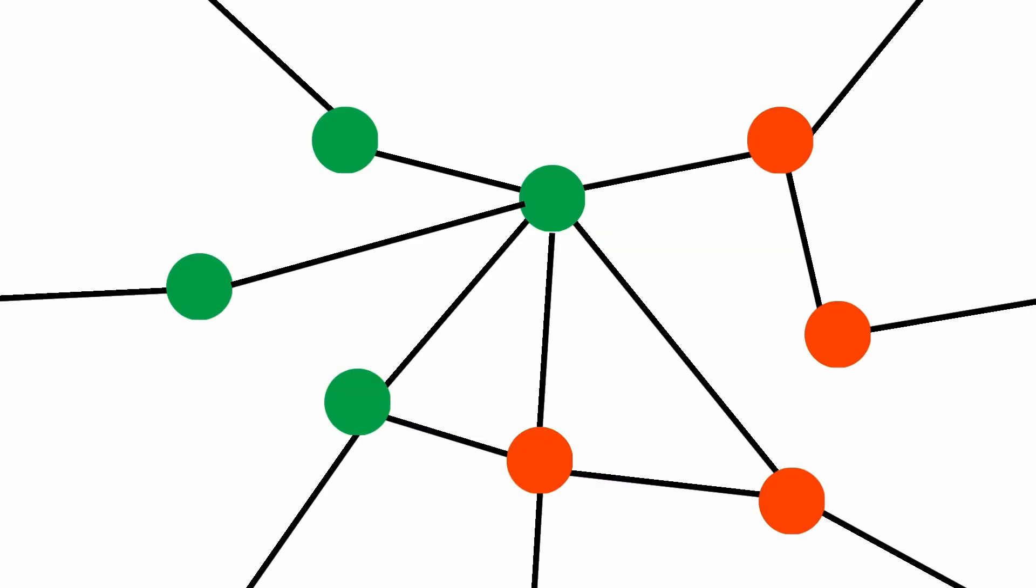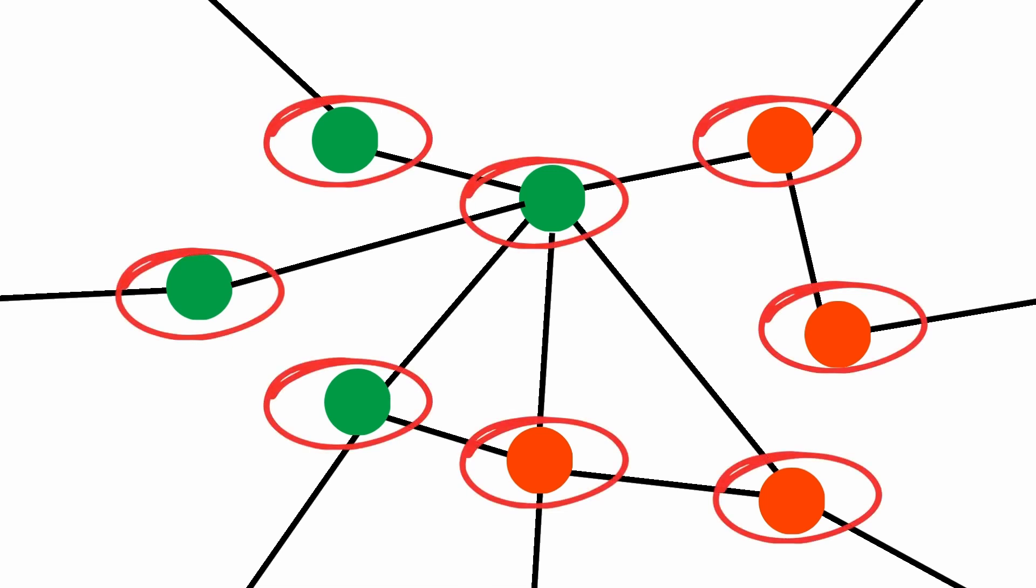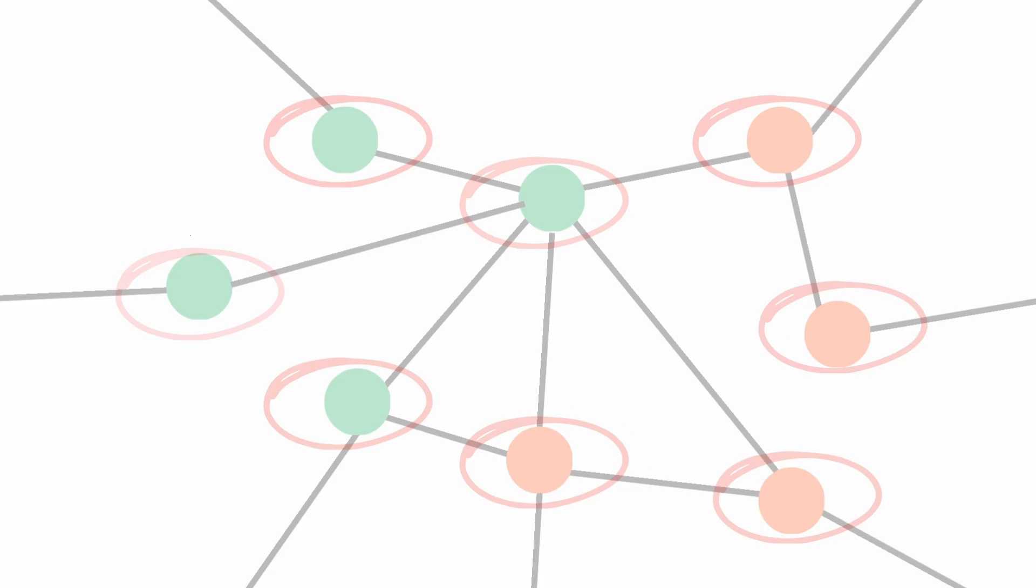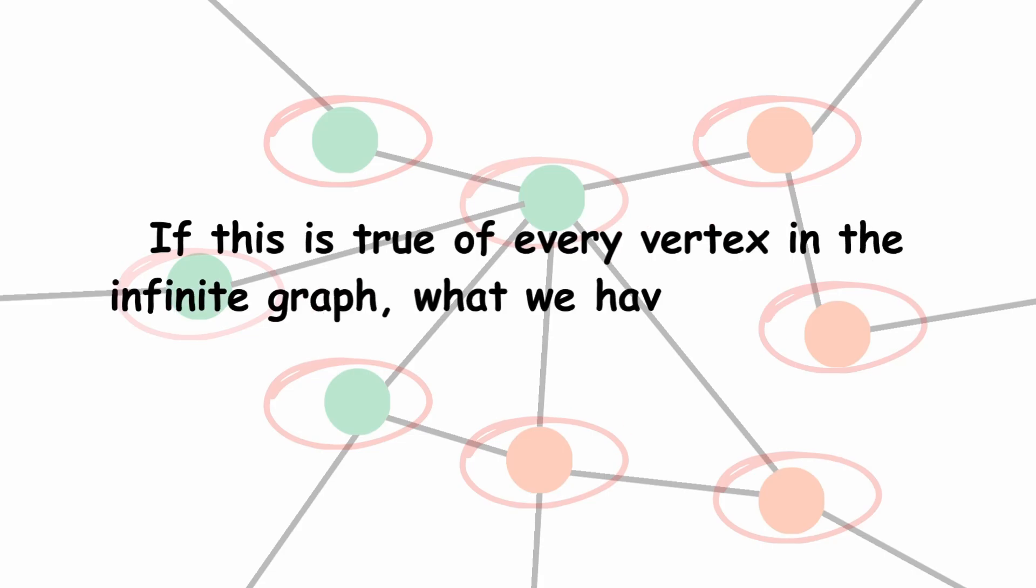Suppose this applies to each vertex that has at least as many other colored neighbors as it has same colored neighbors. If this is true of every vertex in the infinite graph, what we have is called an unfriendly partition.